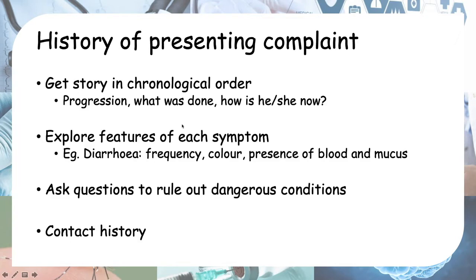Next is history of presenting complaint — you need to get a story of what happened. For example, how the mother brought the child to the clinic, what was done at the clinic, whether it helped, and what made them end up in the hospital. This is the progression of the presenting complaint in chronological order. A good way to elicit the story is to ask about onset and progression, what was done, and how the child is now.